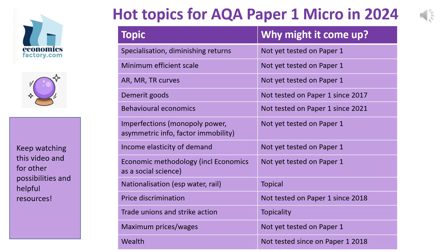Another topical area is nationalisation, especially in relation to the water industry, which has been a source of some controversy over the past couple of years. We then turn to labour markets, where trade unions and strike action are topical. Wealth also hasn't been tested on the paper since 2018, and since we've had recent questions about distribution of income and poverty, turning to wealth is a particular area to look at.